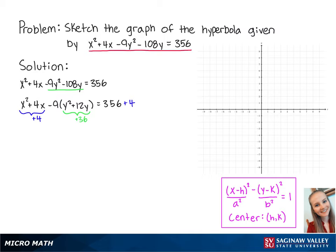But since we factored out a negative 9 on the left side, we have to add 36 times negative 9 on the right side. So after completing the square, we have x plus 2 squared minus 9 times y plus 6 squared equals 36.